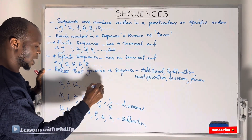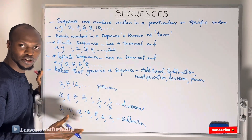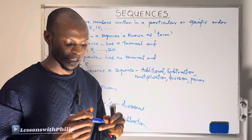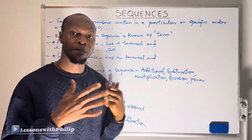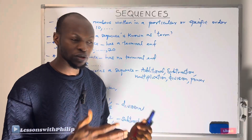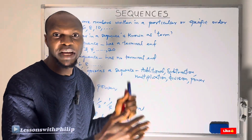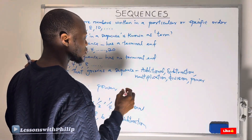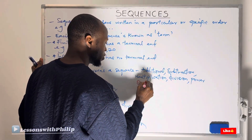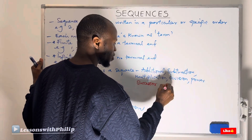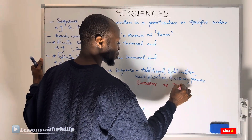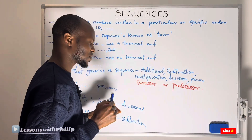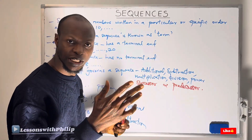That is just to tell you that each sequence has a particular law or rule that commands the arrangement of terms. Another thing we need to take note of is what we call the successor and the predecessor in a sequence. What is a successor and what is a predecessor in a sequence?